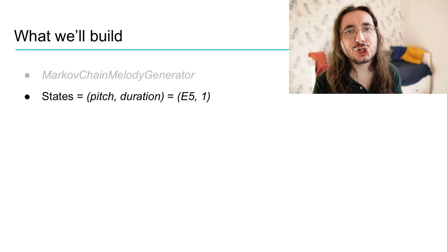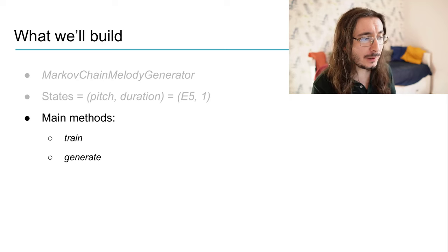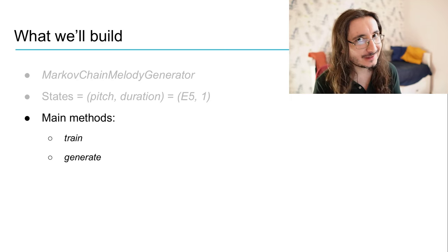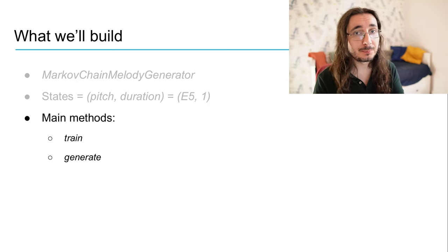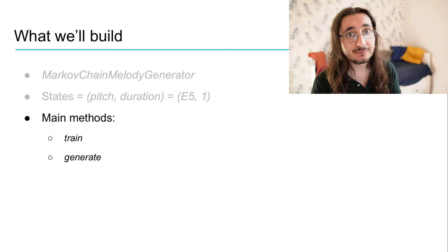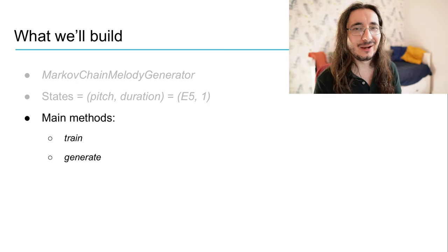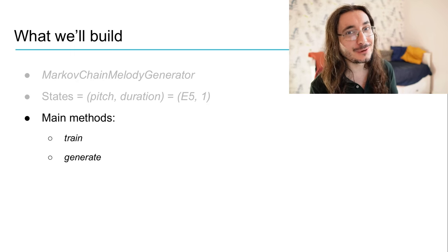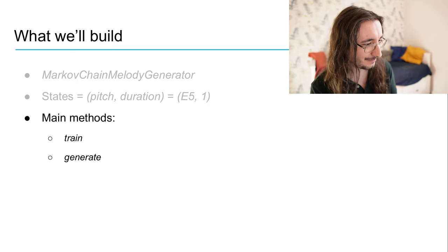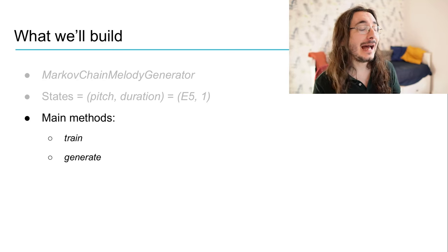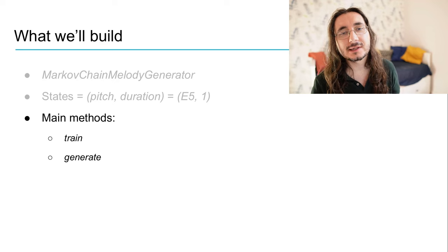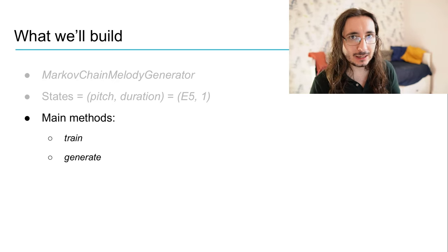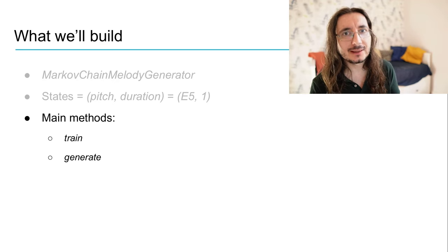We'll see two main methods here. One is called train, and we're going to be using this to learn the probabilities of the Markov chain directly from some corpus. The corpus is going to be extremely simple. Then we're going to have another method called generate, and we're going to be using this to generate a melody leveraging the Markov chain.